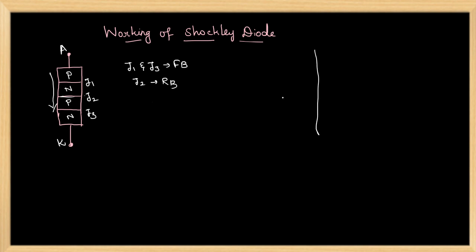When you see the VI characteristics of this Shockley Diode, there will be a small leakage current flowing through the diode. When the forward voltage exceeds the breakover voltage, the current flow increases significantly.